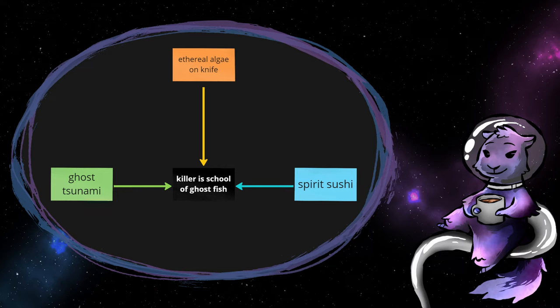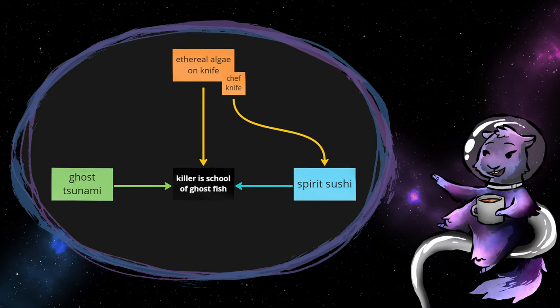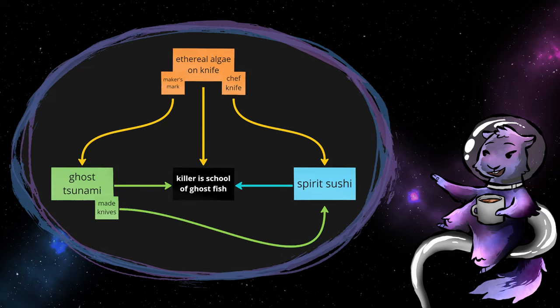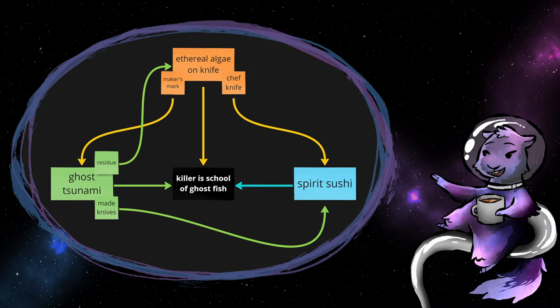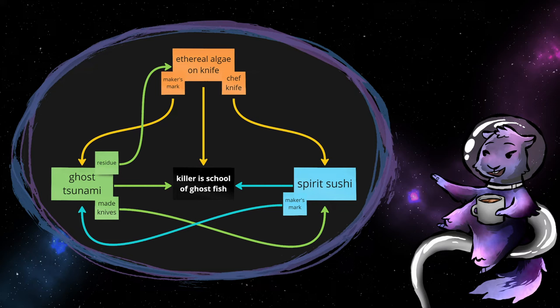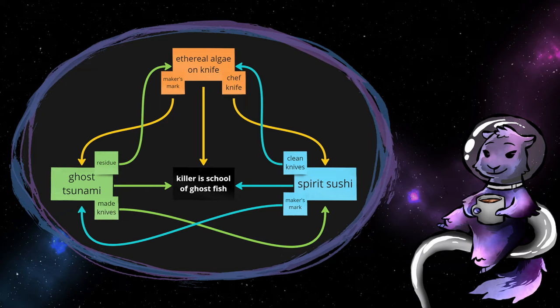But when I apply this system, the entire scenario becomes richer. The knife is a chef's knife that belongs to the victim. It has a maker's mark on it from the local blacksmith, who sold the knives to the victim for their new restaurant, and also witnessed the ghost tsunami wash over town, leaving residue on the forge. In the restaurant, the party can find the rest of the knives, also bearing the maker's mark.